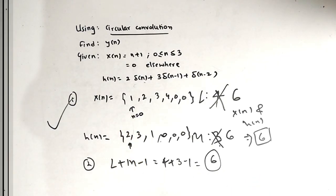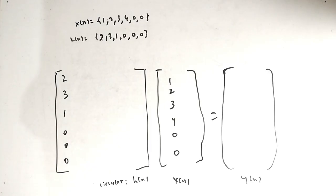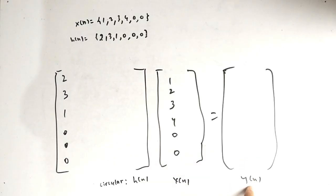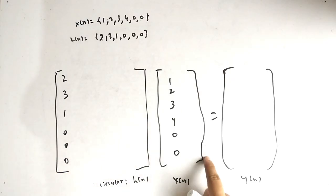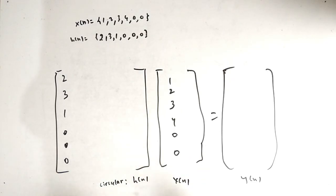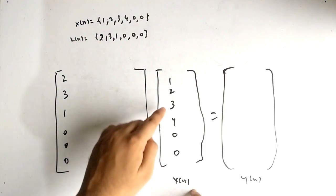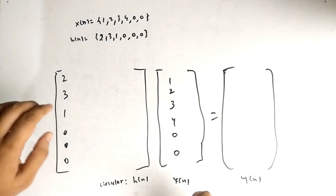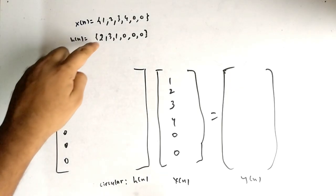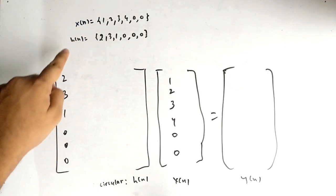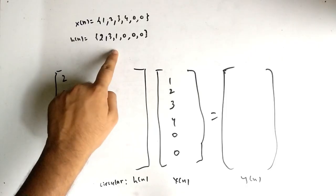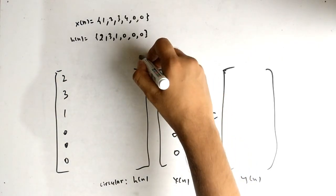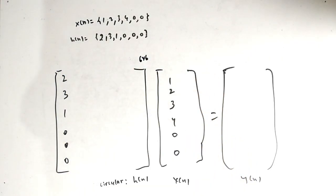Now we have to fill the matrix. Two matrices are multiplied to get the final matrix y(n). x(n) is filled directly as the column vector [1, 2, 3, 4, 0, 0]. Here is the circular part: the first row of the h(n) matrix is [2, 3, 1, 0, 0, 0] as per the h(n) values. This is now a 6×6 matrix.